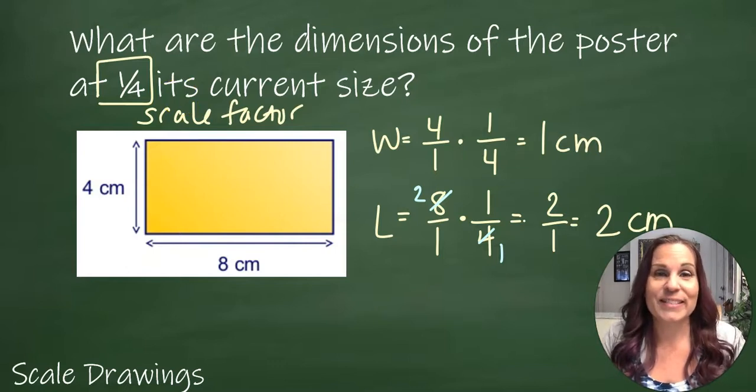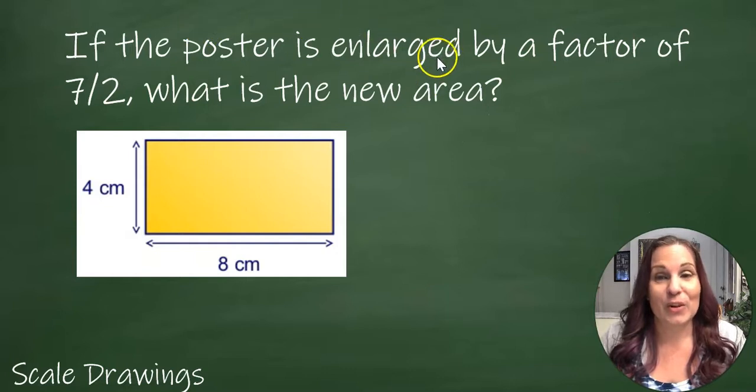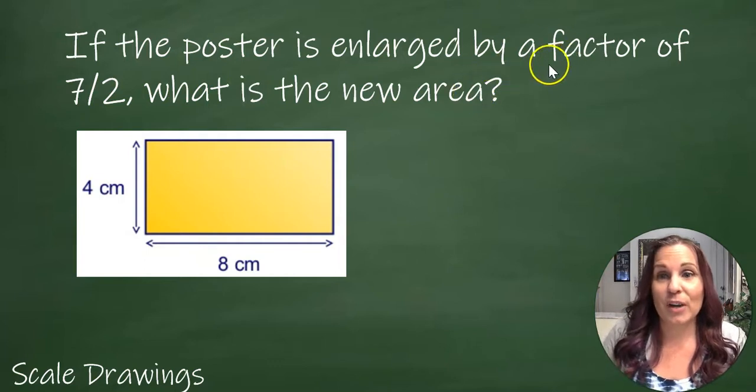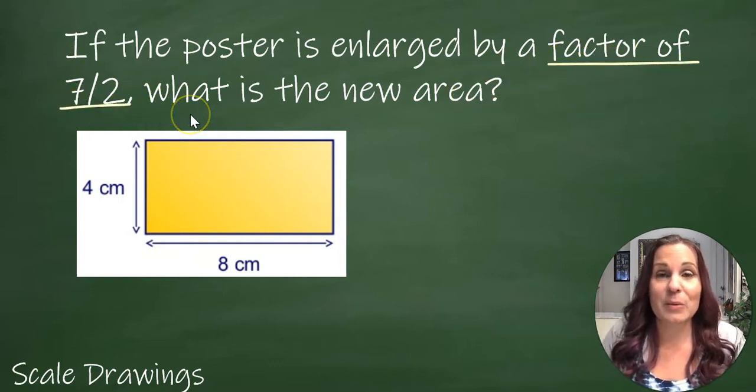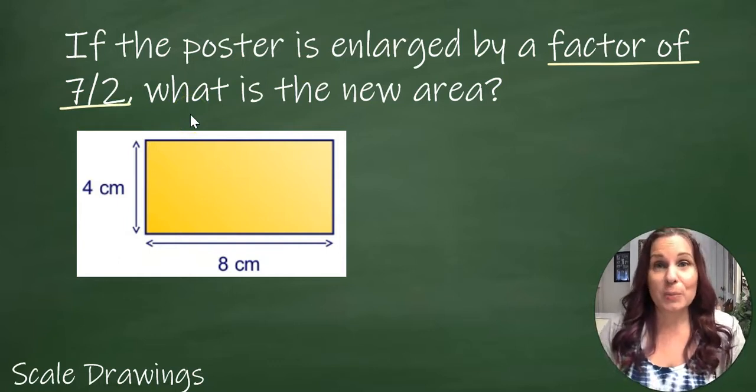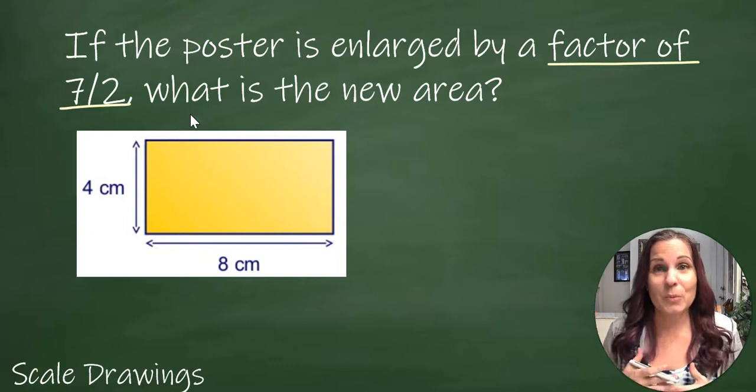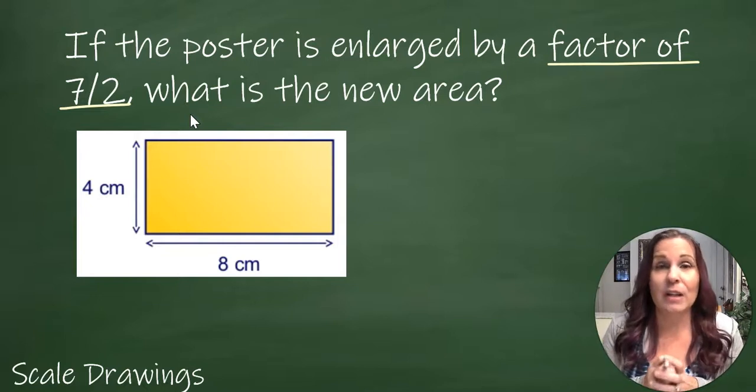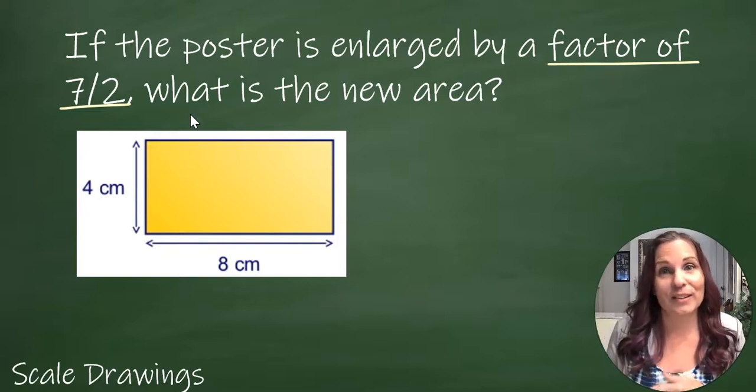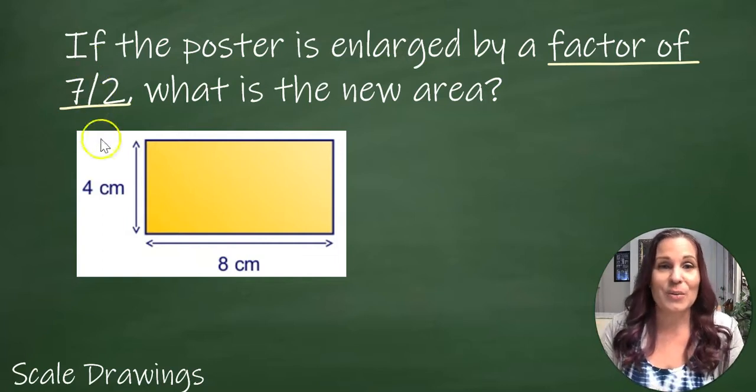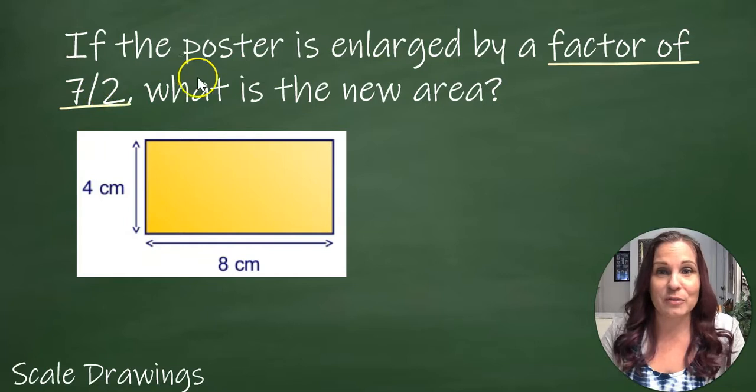Let's try another one. If the poster is enlarged by a factor of 7/2, what's the new area? We've still got a factor of something. When you multiply by a scale factor less than 1, the image gets smaller. If you multiply by a scale factor greater than 1, the image gets bigger. So 7/2 is the same as 3.5, so it makes sense that this is an enlargement.